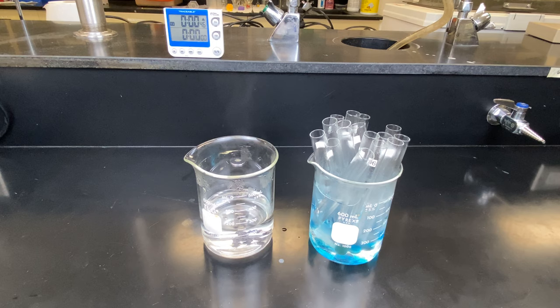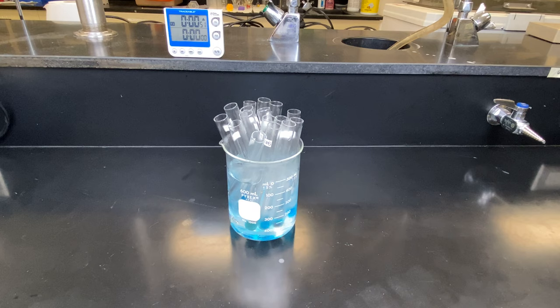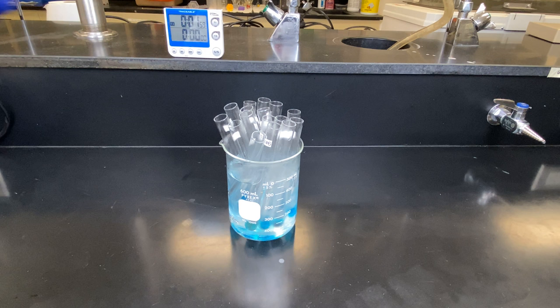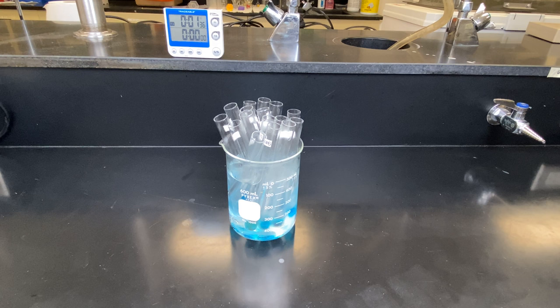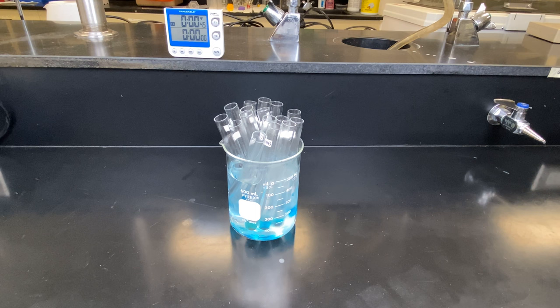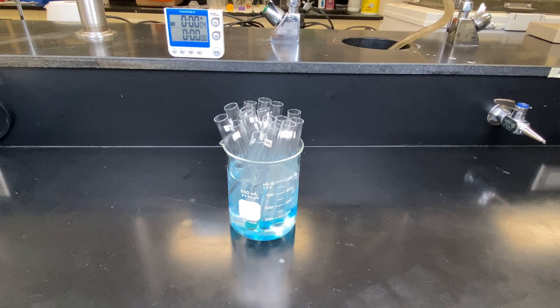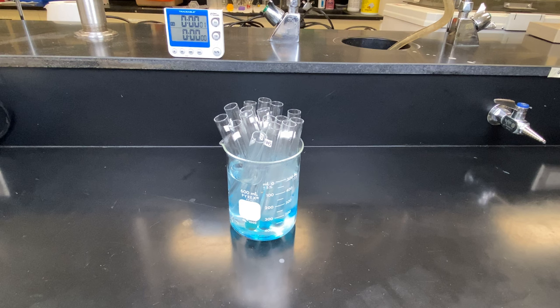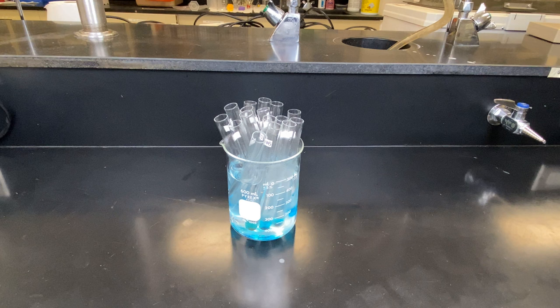We will then let this cool for two minutes before we analyze whether or not we have any precipitate in our tubes containing monosaccharides. Let's fast-forward at 10 times speed so we're not sitting here waiting for two minutes. If you look closely, you can see some red precipitate in the bottom of a few of the test tubes.